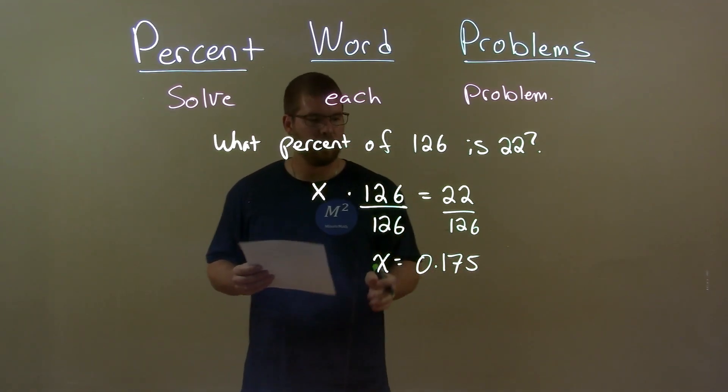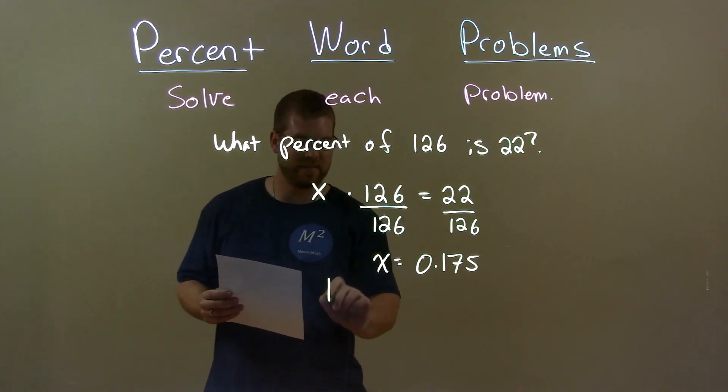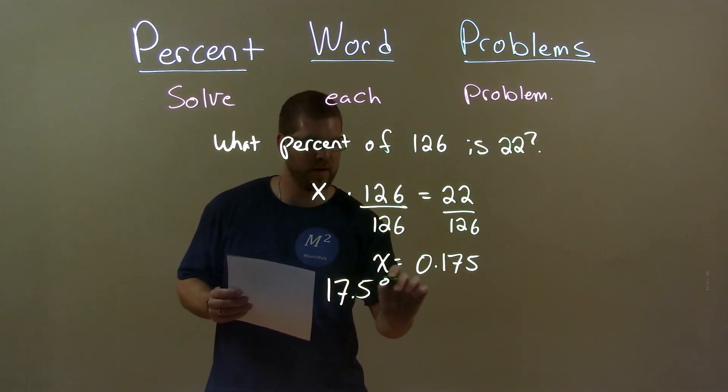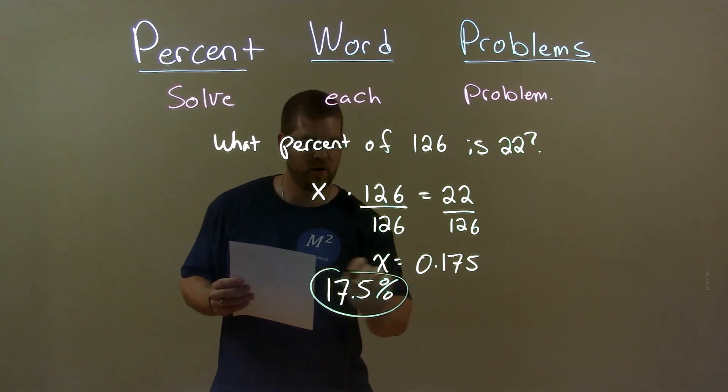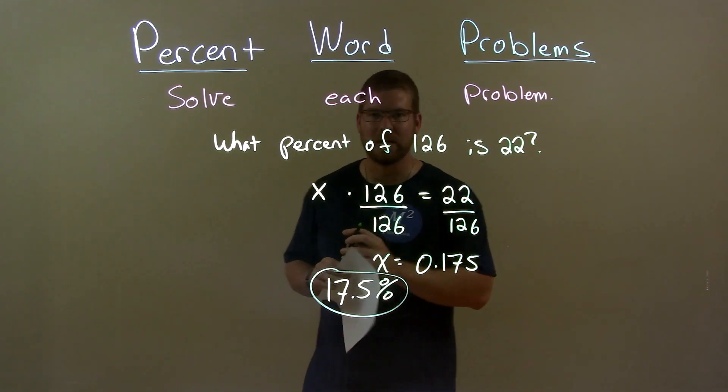With x being 0.175, we can convert that to a percent and that's 17.5%. And there we have our answer: 17.5% of 126 is 22.